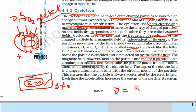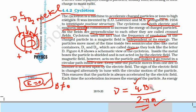The frequency of the particle is given by qB/2πm. We know the charge of the particle, we know the mass of the particle, and if we fix the magnetic field B, we know what the frequency of the particle will be.